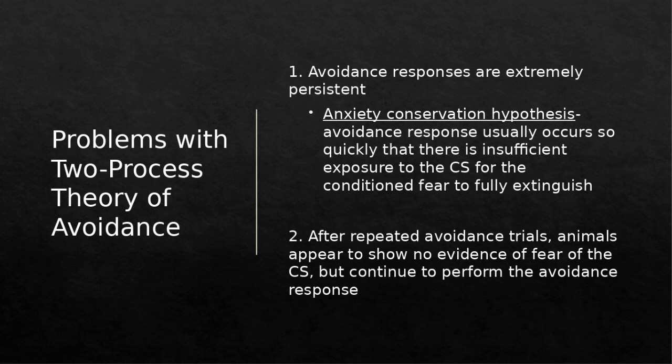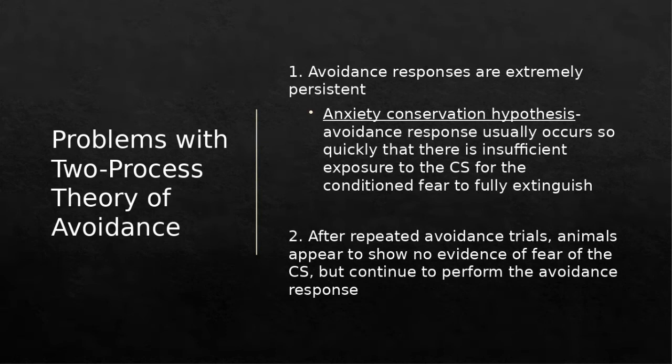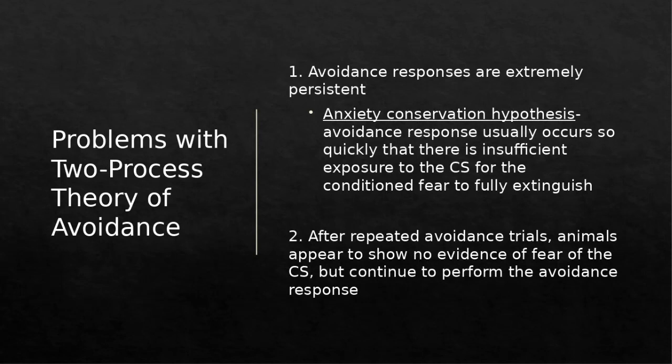Another problem with the two-process theory: after repeated avoidance trials, animals appear to show no evidence of fear of the CS but continue to perform the avoidance response. After the mouse learns to jump over the barrier and avoid the shock, it shows no fear of the light — when put near the light or when the light comes on, it doesn't seem afraid. If fear were driving the behavior of jumping over the barrier, you'd expect the mouse to show some fear when exposed to the light, but it does not.